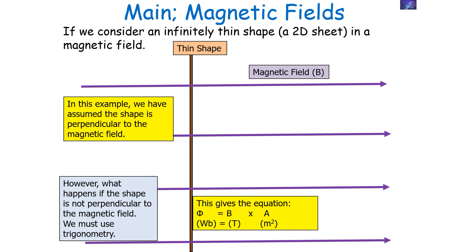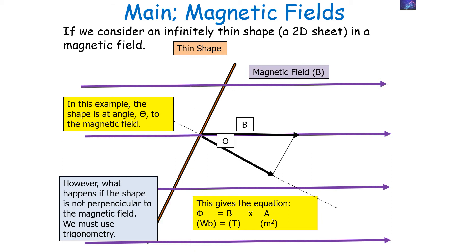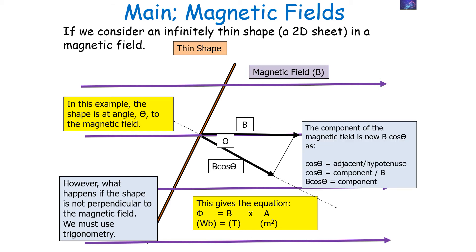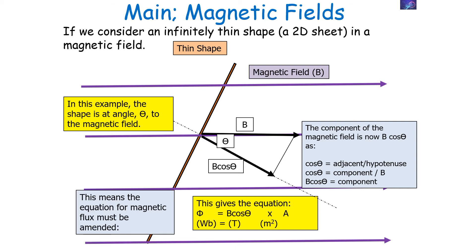However, what happens if this sheet is not perpendicular to the magnetic field? Well, we've got to use some trigonometry. In this example, the shape is at an angle theta to the magnetic field, as shown on this diagram. The component of the magnetic field is now B cos θ, because cos θ = adjacent over hypotenuse, so cos θ = component over B, and therefore B cos θ equals our component. We can now change our equation to consider this angle factor: Φ = BA cos θ. This is the full equation which links the magnetic flux and the magnetic flux density in a given situation.